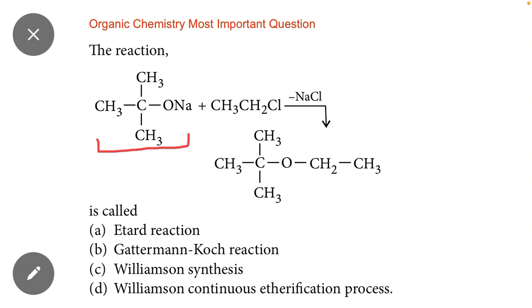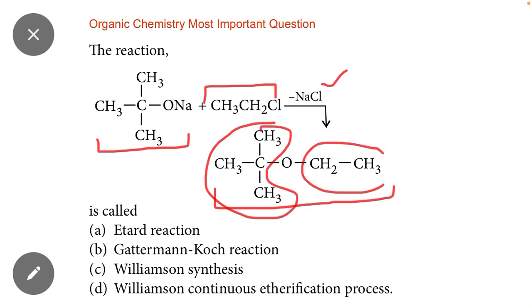A sodium salt of alkyl oxide is reacted with alkyl chloride to remove sodium chloride, and the final product is formed as an ether. Here you can see that this portion is an alkyl portion, and this is also an alkyl portion.